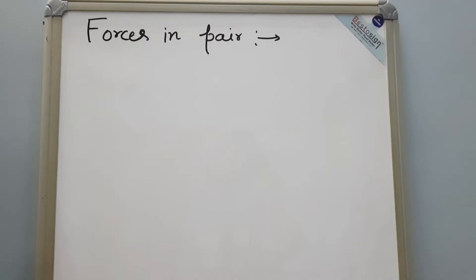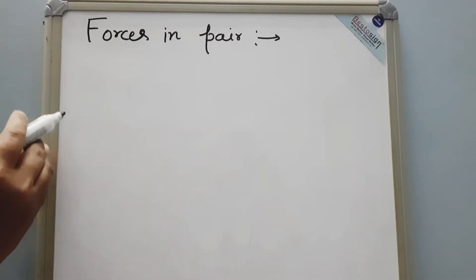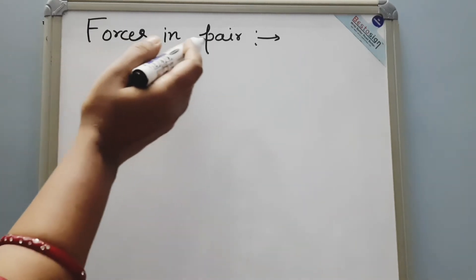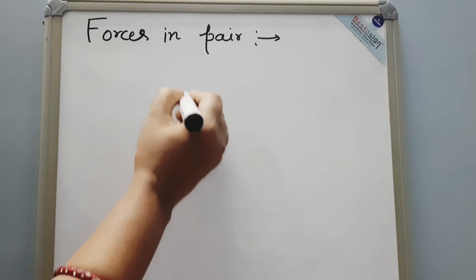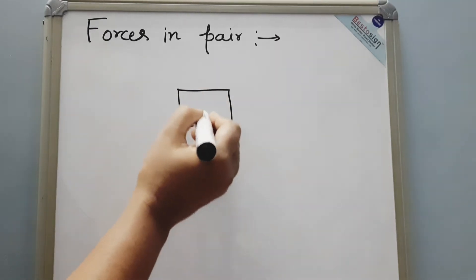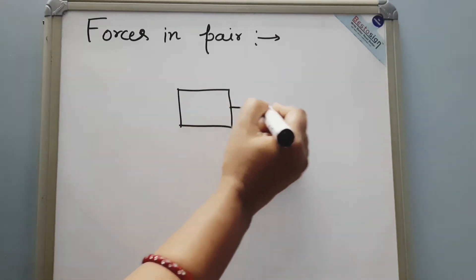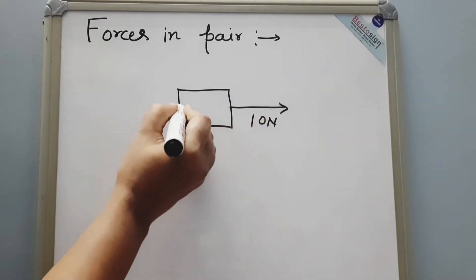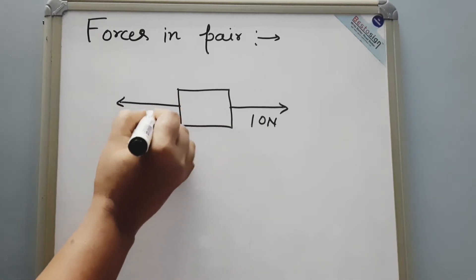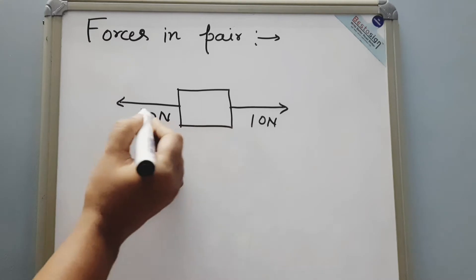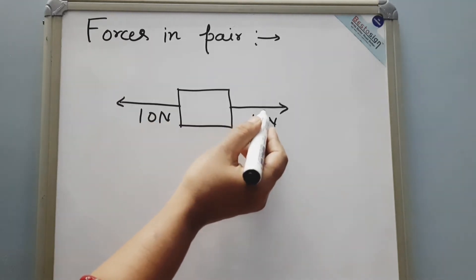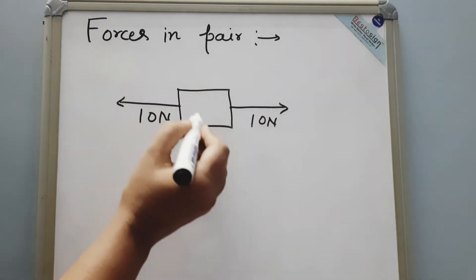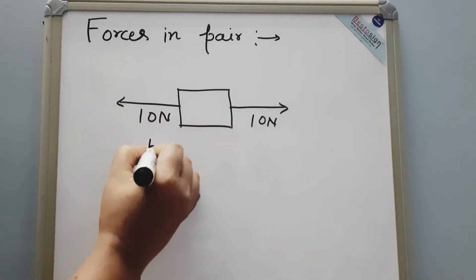We'll see on the board. Now we'll go through some examples to understand more about resultant force. Suppose this is an object under two forces — one force of 10 Newton in this direction, and another force of 10 Newton in the opposite direction. You can see that these two forces are the same in size and in opposite directions, so this is the situation for balanced force.